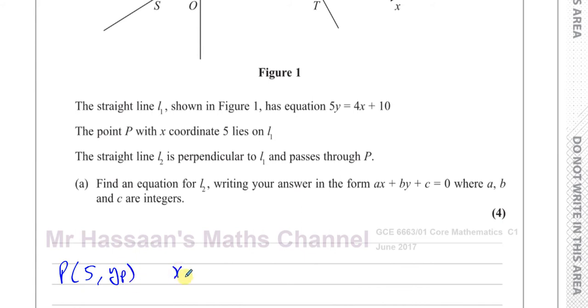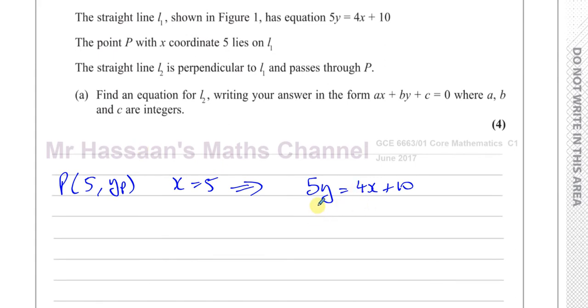I can find the coordinates of P by substituting x equals 5 into the equation 5y equals 4x plus 10. So if I substitute x equals 5 into here, I'll have 5y equals 4 times 5 plus 10. That's 20 plus 10, which is 30. So 5y is equal to 30. So y is equal to 6.